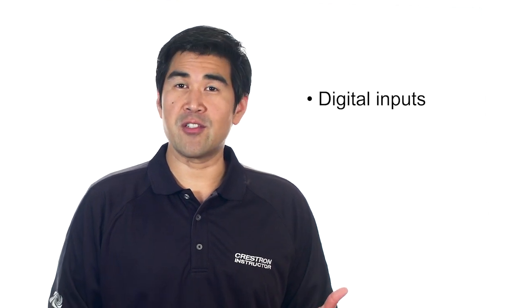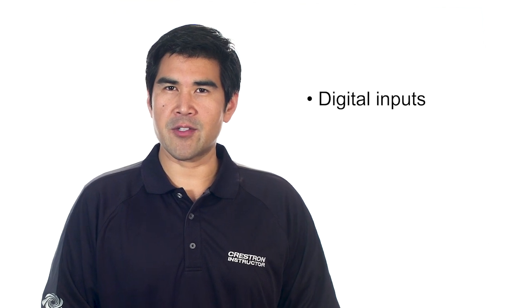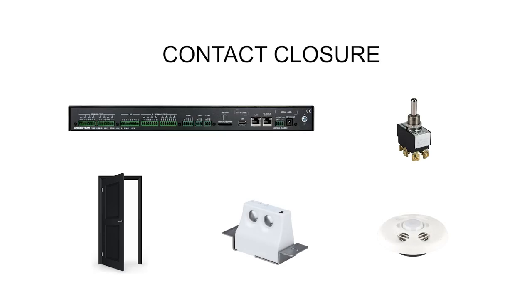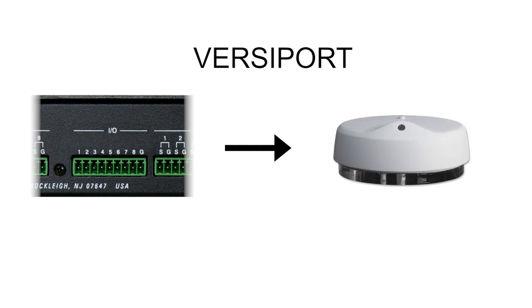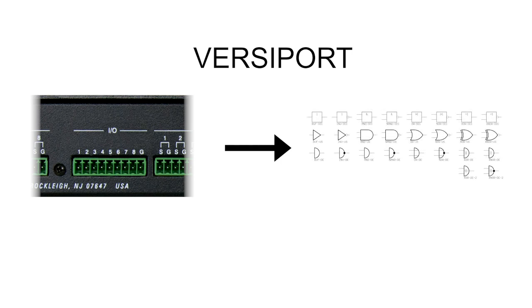Control processors also have digital inputs, and there are two types depending on the processor. The first type is a basic digital input — using the contact closure input allows the processor to be aware if something has changed, such as a door contact in a partitioned room or a motion sensor. The second type is the VersaPort. The VersaPort does everything a normal digital input can do, as well as being able to read an analog voltage between 0 to 10 volts DC, usable with third-party sensors such as a temperature sensor or photocell. The VersaPort can also act as a TTL, or Transistor-Transistor Logic Switch, which is sensitive to voltage changes and common in industrial controls.